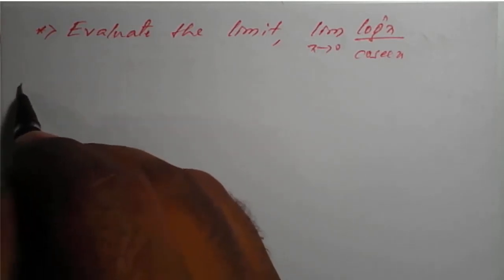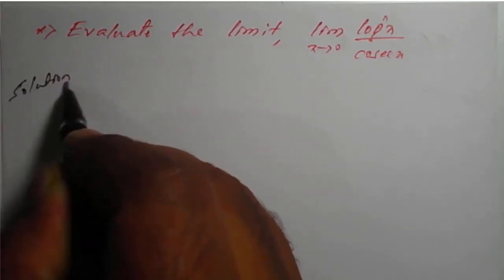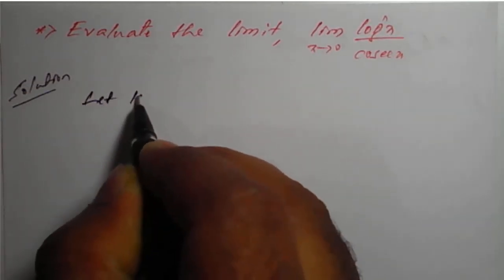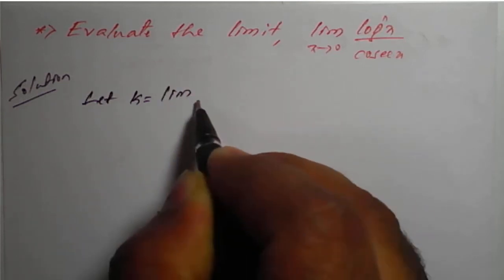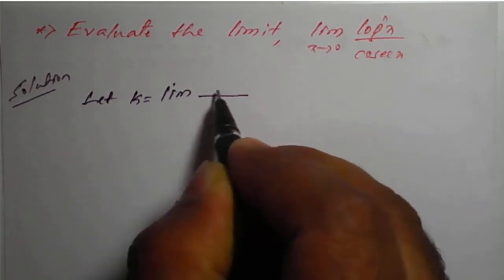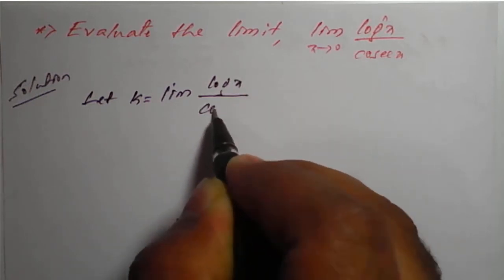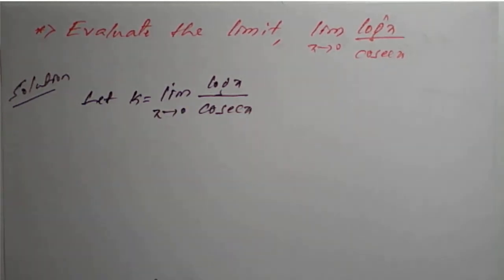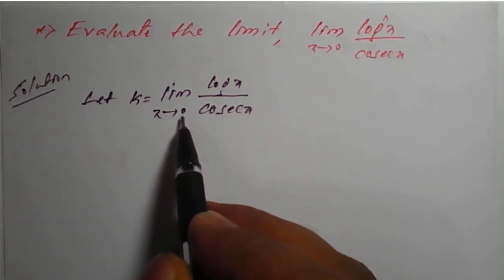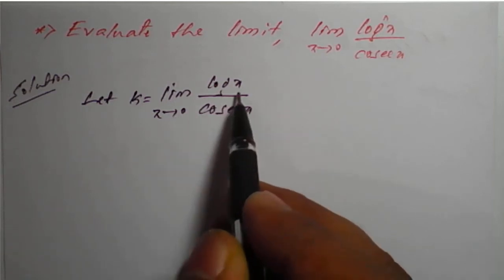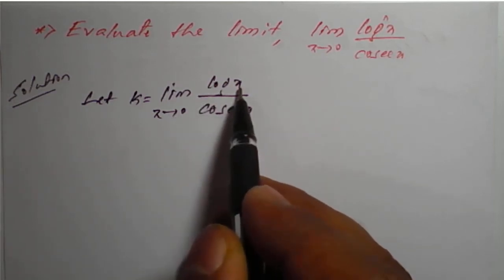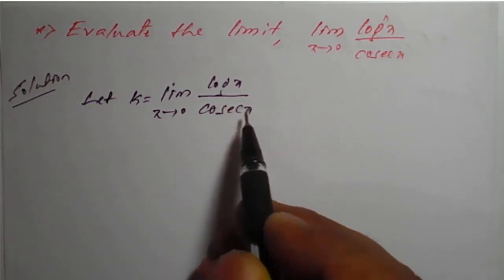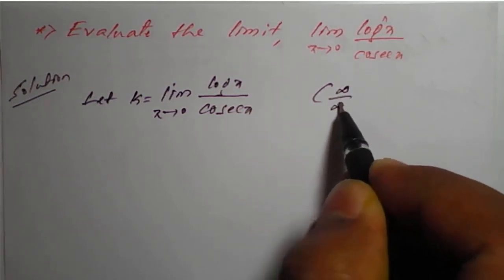Solution. Here the given limit we will consider as k. Let k be equal to the limit of log of x divided by cosecant of x as x tends to 0. Now if we apply the limit value, x equals 0, log of 0 is minus infinity and cosecant of 0 is infinity, so this is an infinity by infinity form.